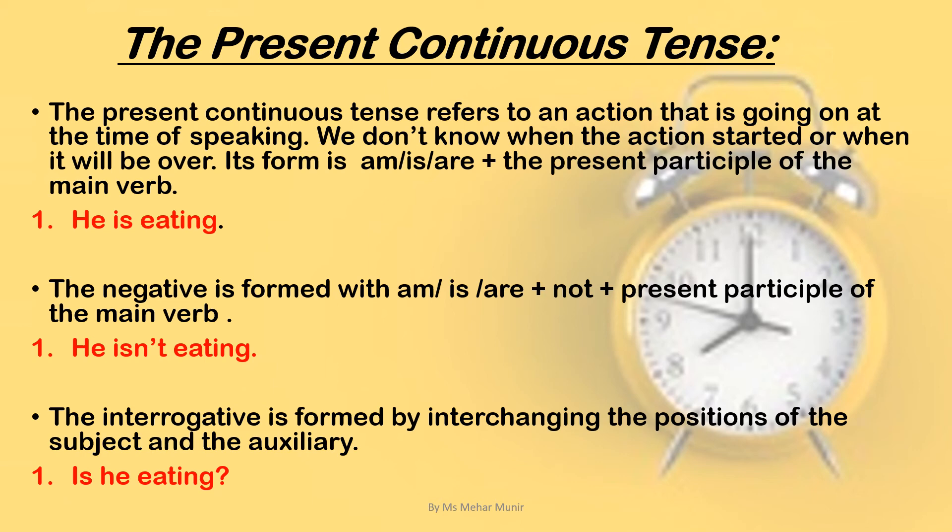The negative is formed with am/is/are plus not plus the present participle of the main verb. We simply add 'not': He isn't eating, or He is not eating. The interrogative is formed by interchanging the positions of the subject and the auxiliary verb: Is he eating? We just interchange the subject and helping verb positions to form a question.